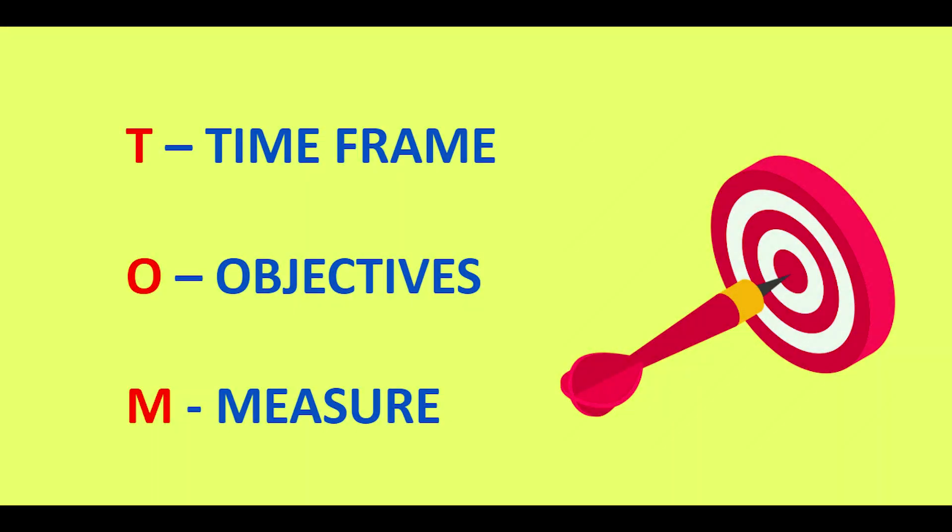O stands for objectives — what is it that you want to achieve? You may want to have a large number of assets, or you may want enough savings for future education or retirement. What are the objectives of your financial goals? M stands for measure — measure and quantify the progress in relation to the time frame and the objectives you've set for yourself.